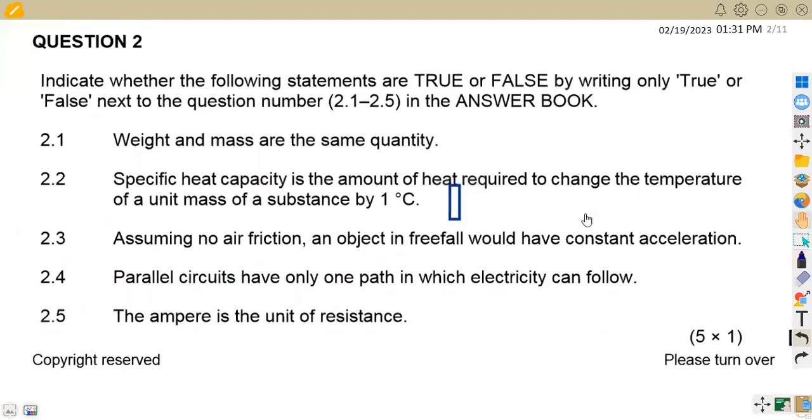On Question 2, indicate whether the following statements are true or false by writing only true or false next to the question. Weight and mass are the same quantity - this is wrong, this is false. Specific heat capacity is the amount of heat required to change the temperature of a unit mass, which is 1 kg by 1 degree. That is exactly it, so this is true.